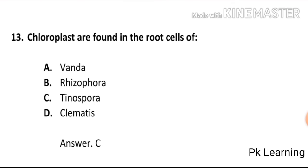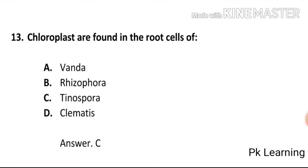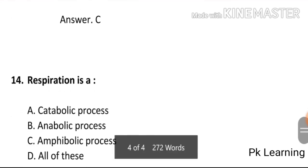Chloroplasts are found in the root cells of: A) Vanda, B) Rhizophora, C) Tinospora, D) Climates. The answer is C, Tinospora. Chloroplasts are found in the root cells of Tinospora. C is the correct option.